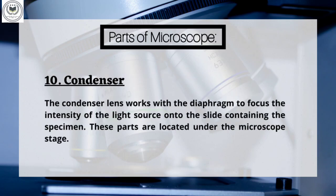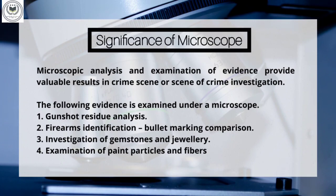Part 10: Condenser. The condenser lens works with the diaphragm to focus the intensity of the light source onto the slide containing the specimen. These parts are located under the microscope stage.